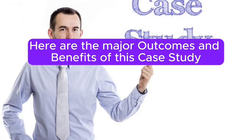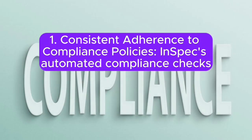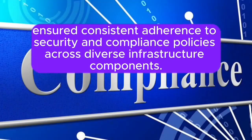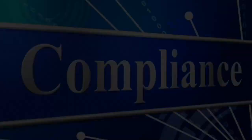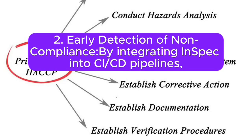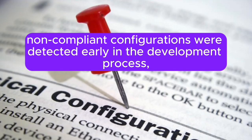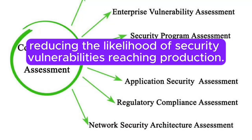Here are the major outcomes and benefits. Outcome 1: Consistent Adherence to Compliance Policies. InSpec's automated compliance checks ensured consistent adherence to security and compliance policies across diverse infrastructure components. Outcome 2: Early Detection of Non-Compliance. By integrating InSpec into CI/CD pipelines, non-compliant configurations were detected early in the development process, reducing the likelihood of security vulnerabilities reaching production.